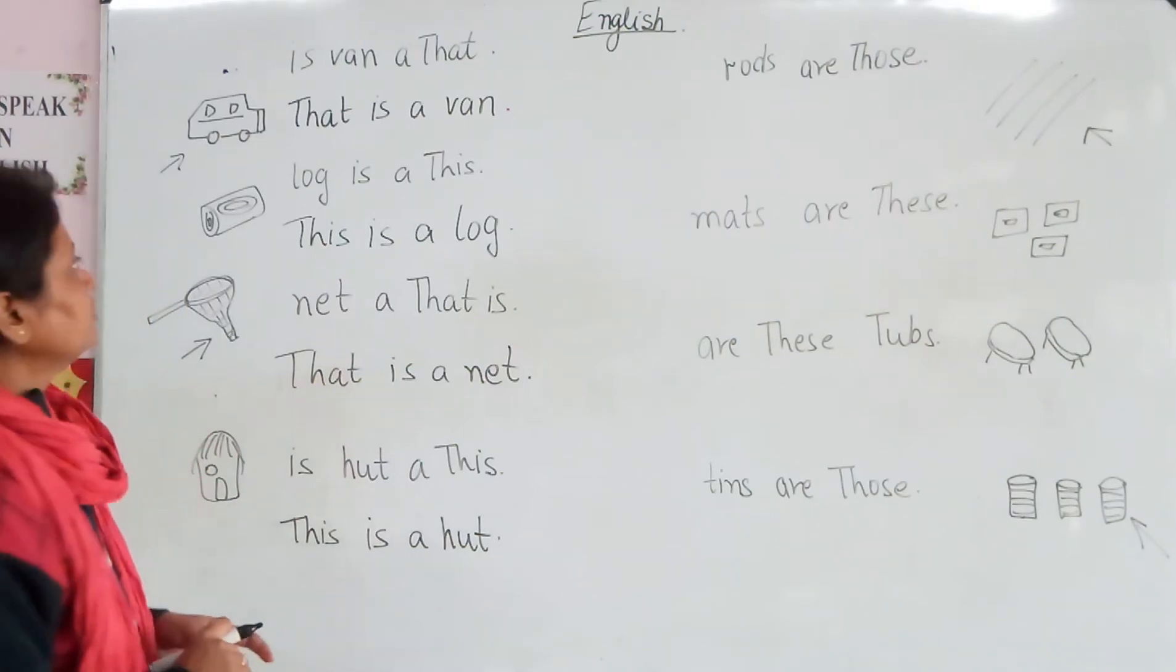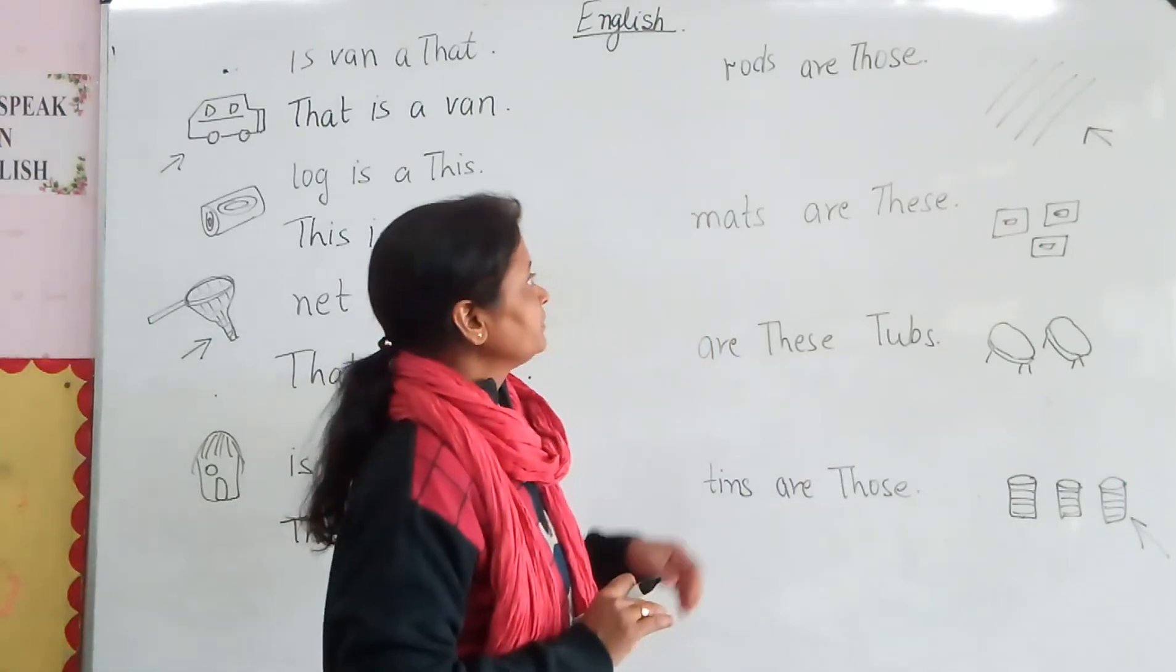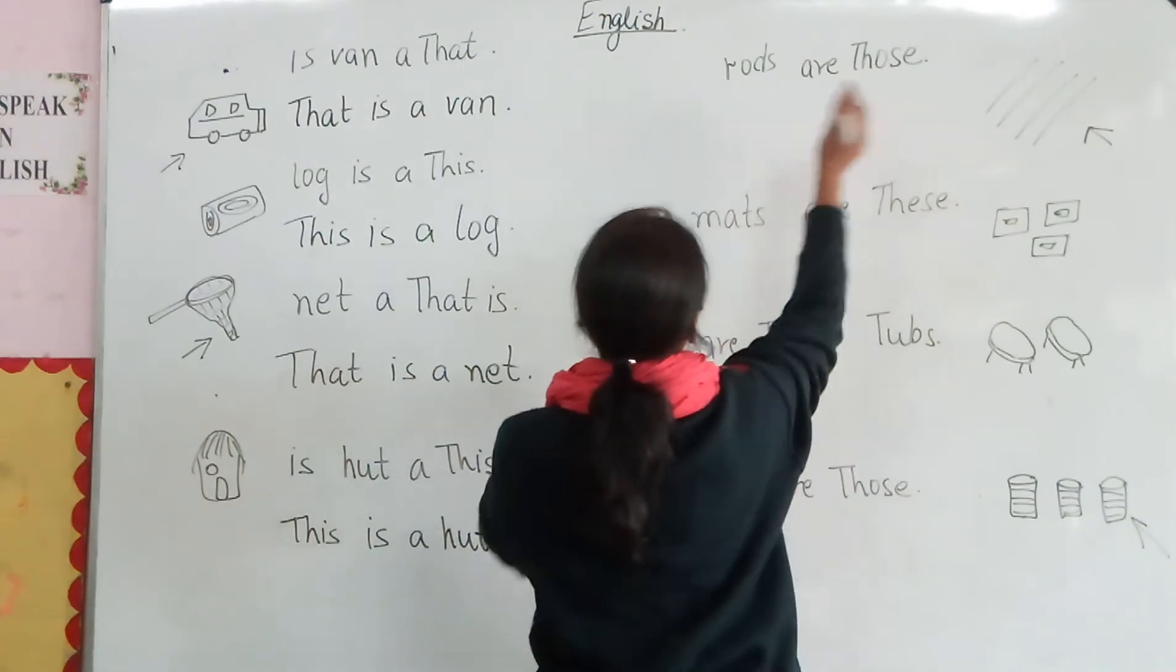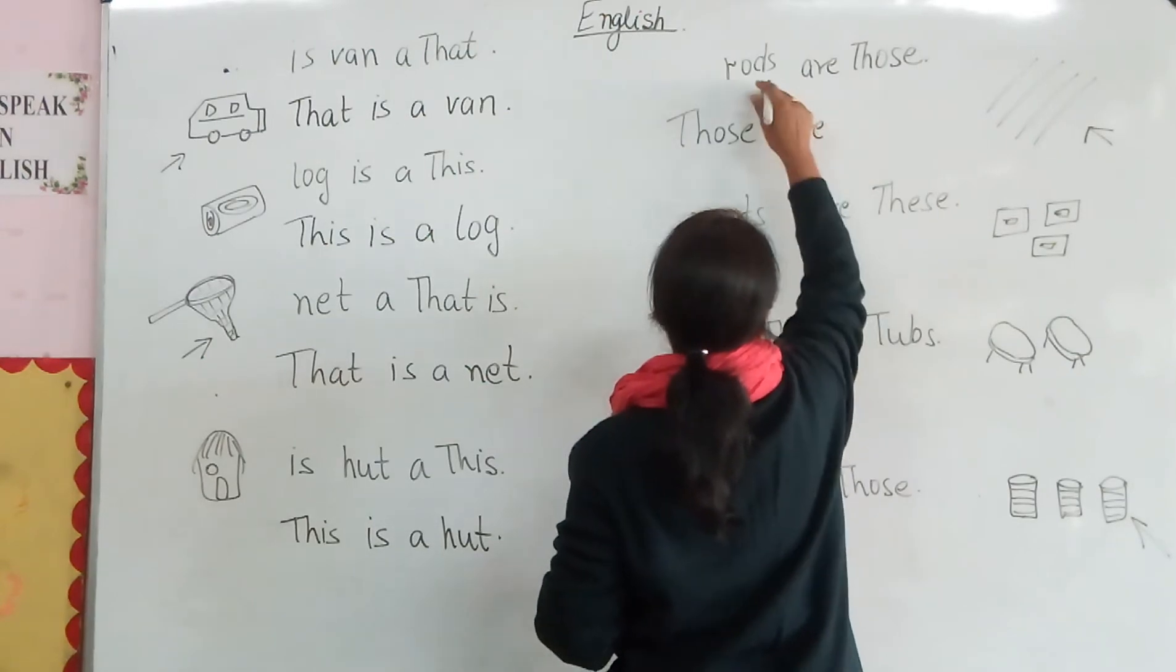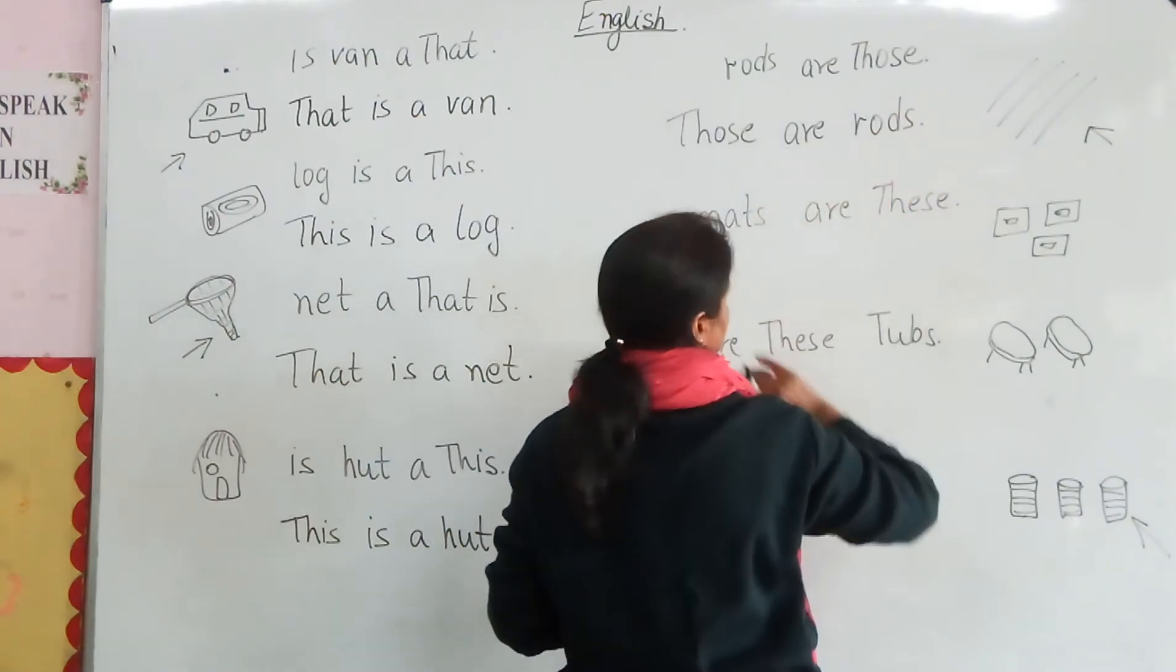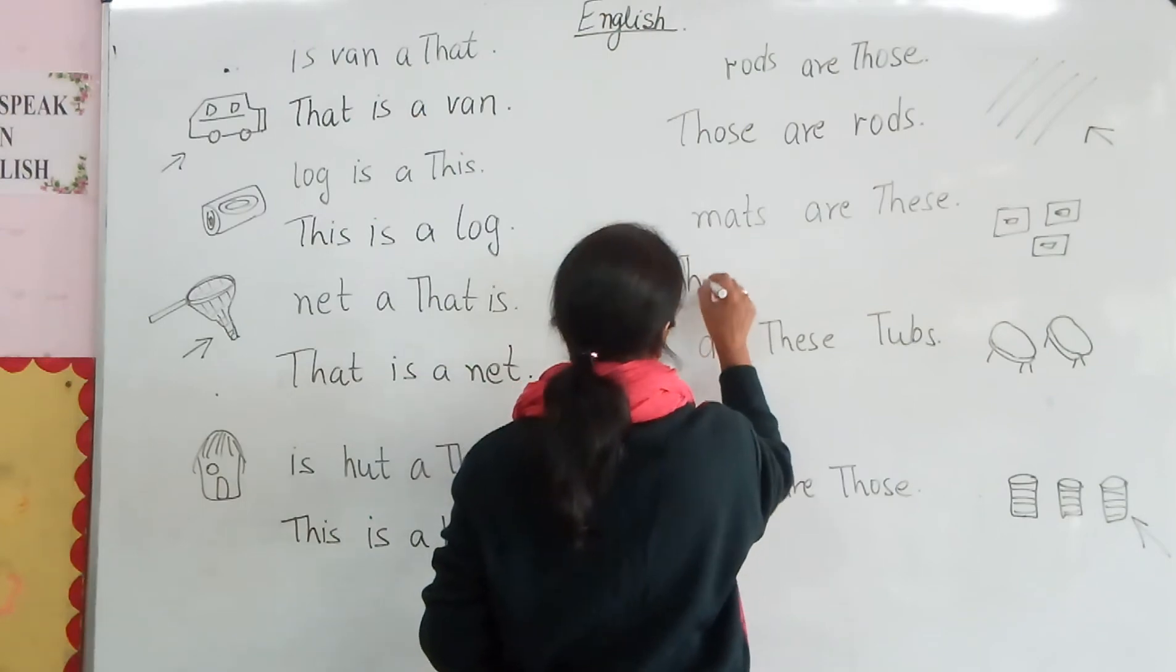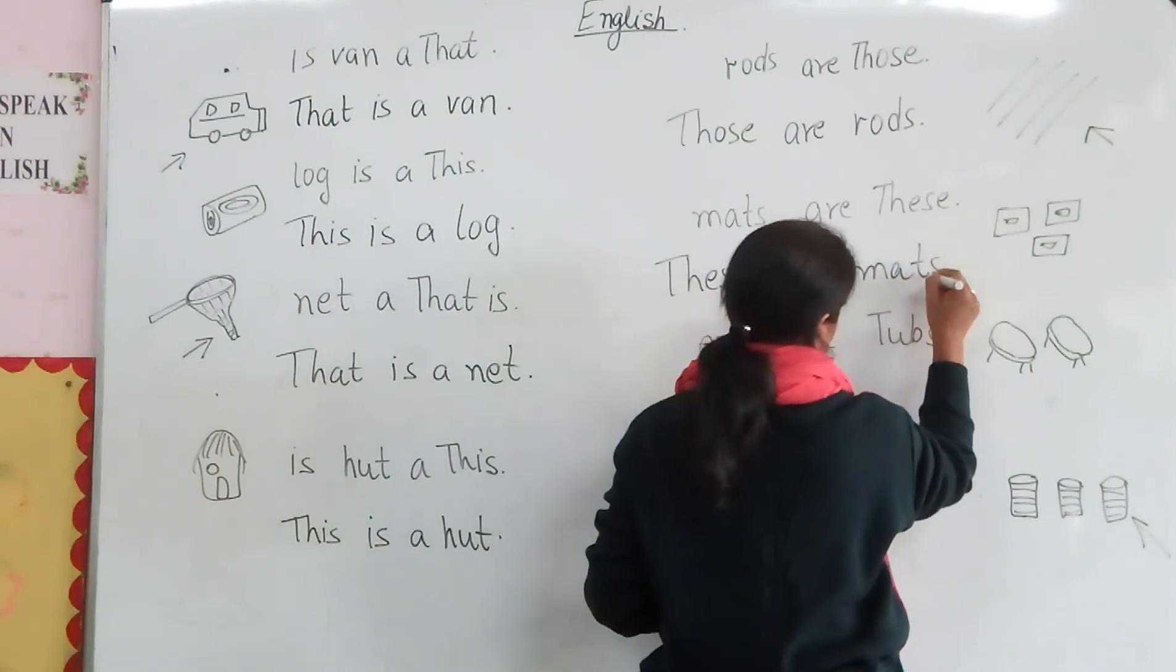Now we will answer this question, how do we write the sentence? Normally we will do the words of these and those. If this is a bell, it is a bell. So if it is a bell, it will be a bell. So the same thing is that - those are rods. These are rods. These are rods.